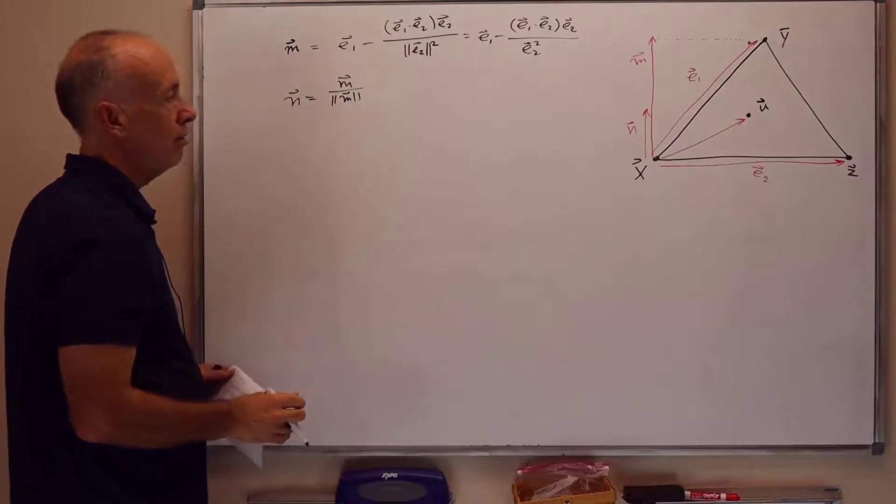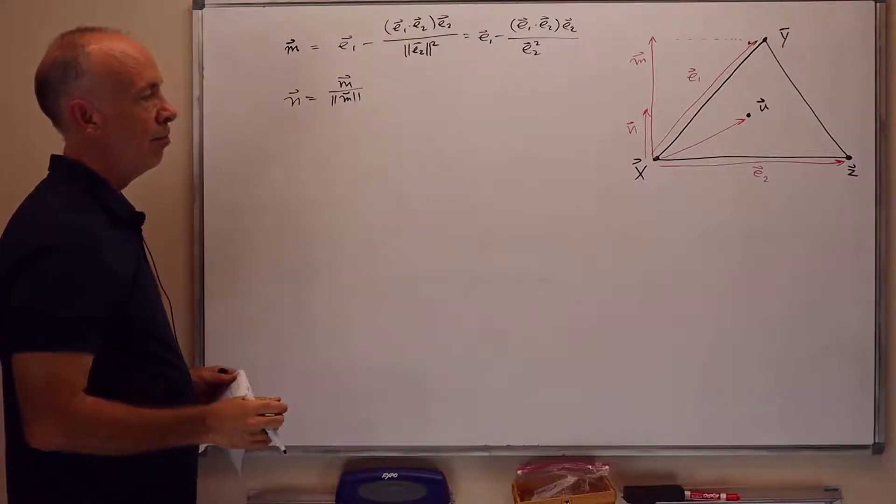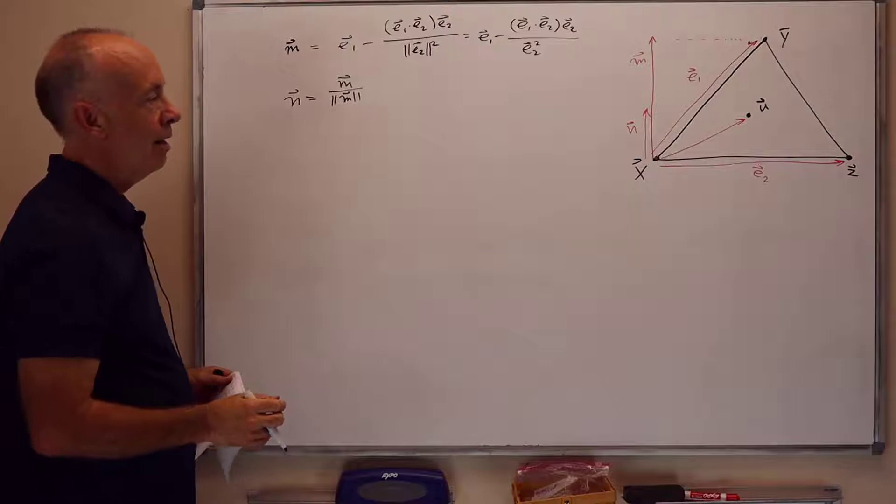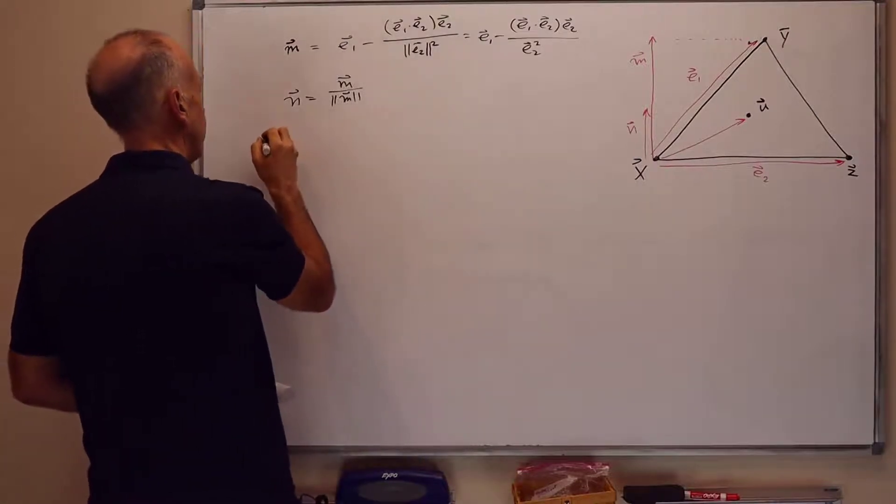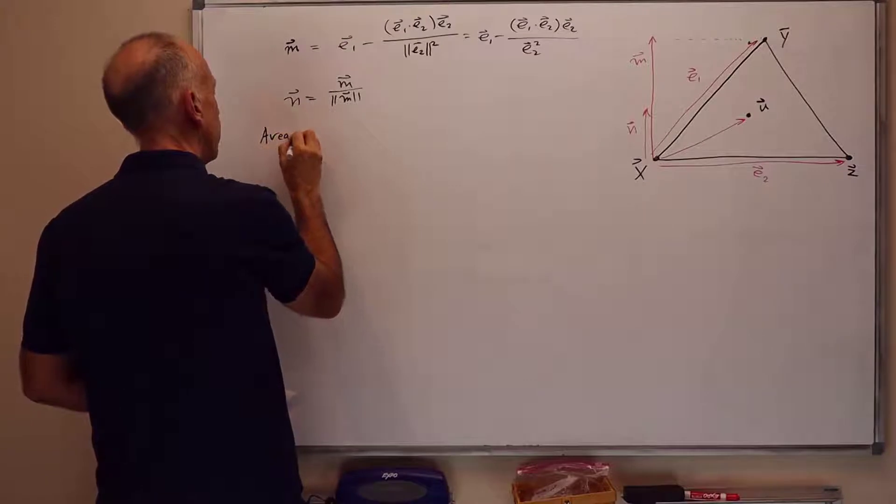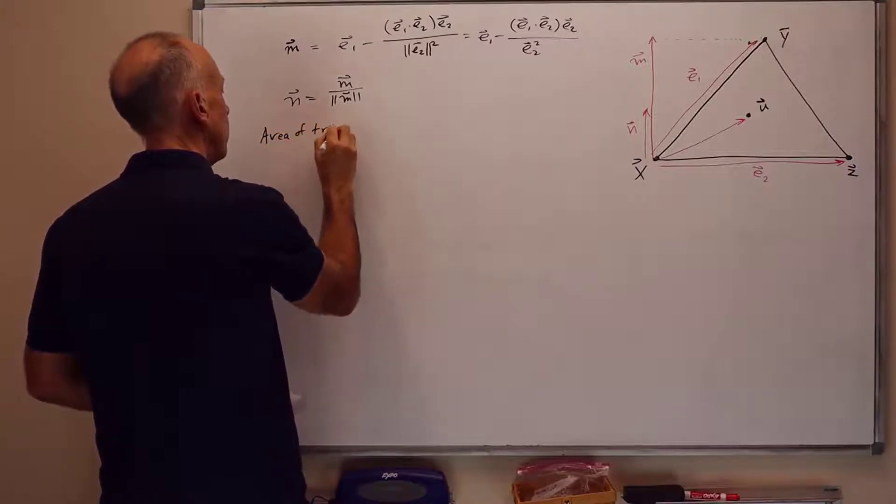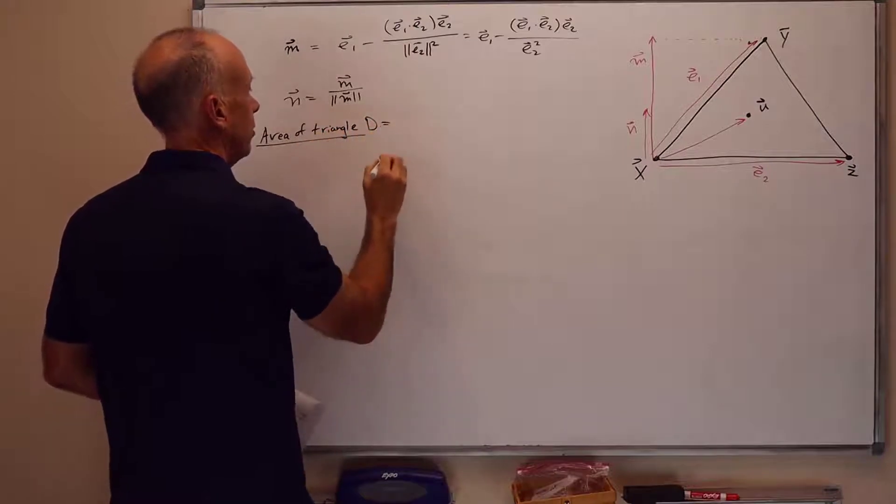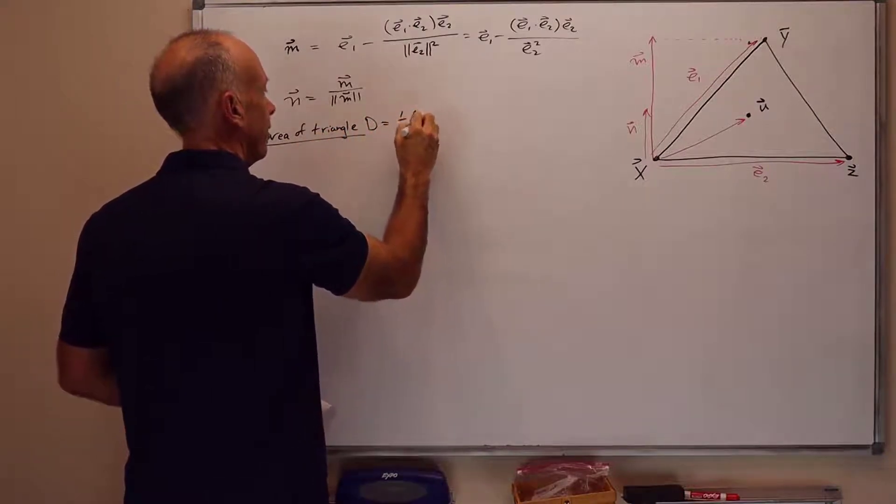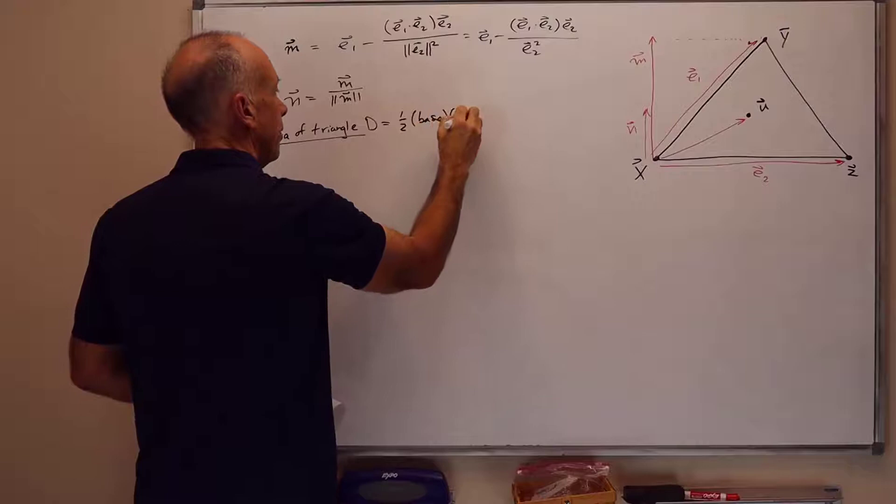So now we're going to use the area formulas that I derived last time. And we'll say that the area of the triangle, d, is equal to, so it's one-half base times height.